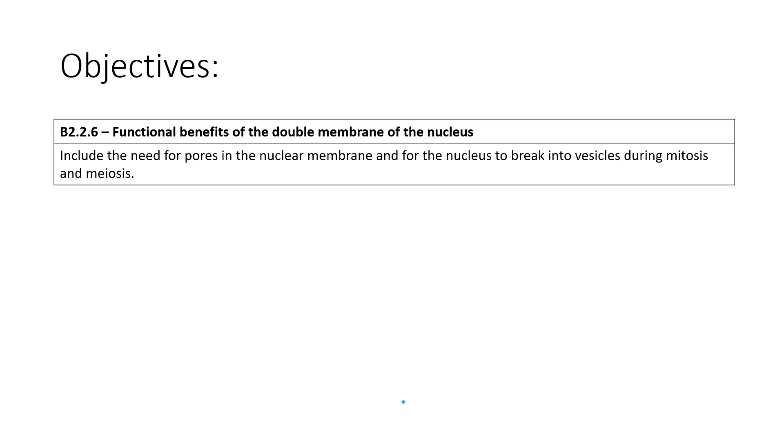Hey guys, Mr. P. In this video we're going to talk about understanding B226, which is the functional benefits of the double membrane of the nucleus. This includes the need for pores in the nuclear membrane and for the nucleus to break into vesicles during mitosis and meiosis.